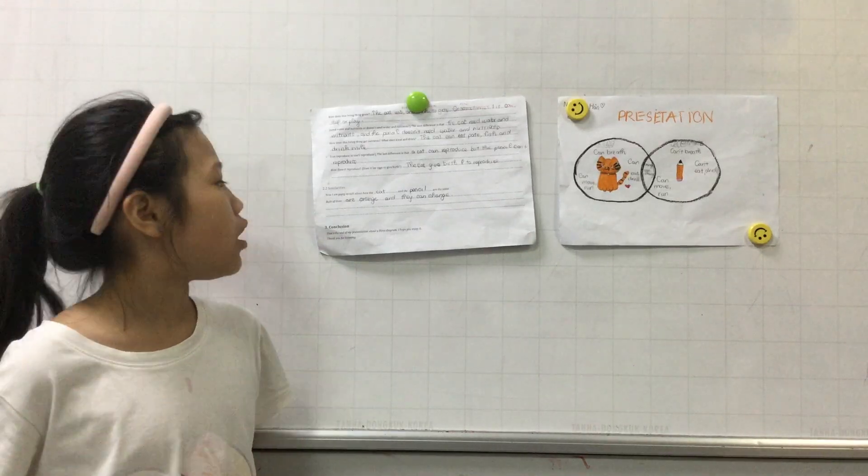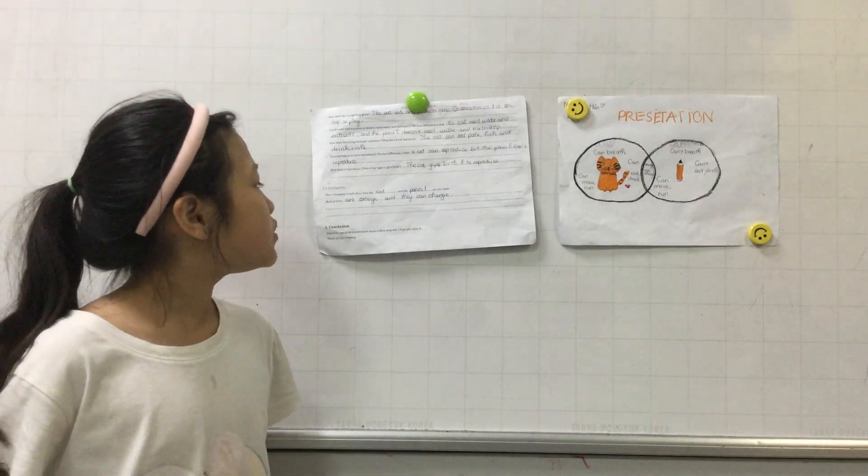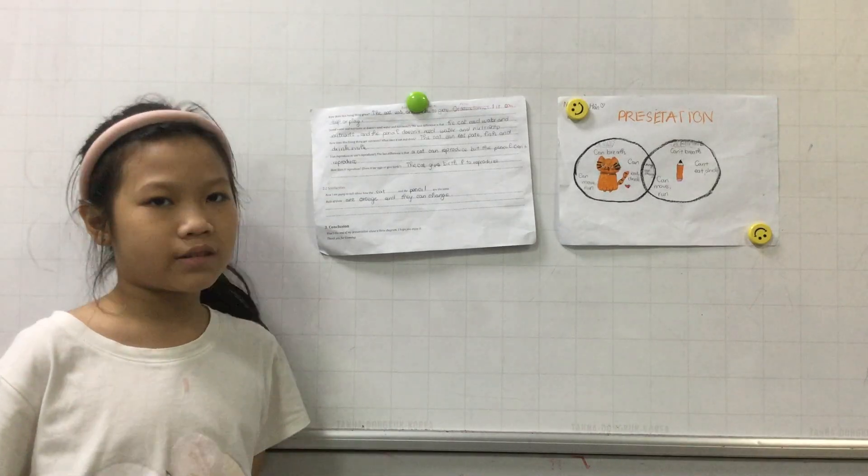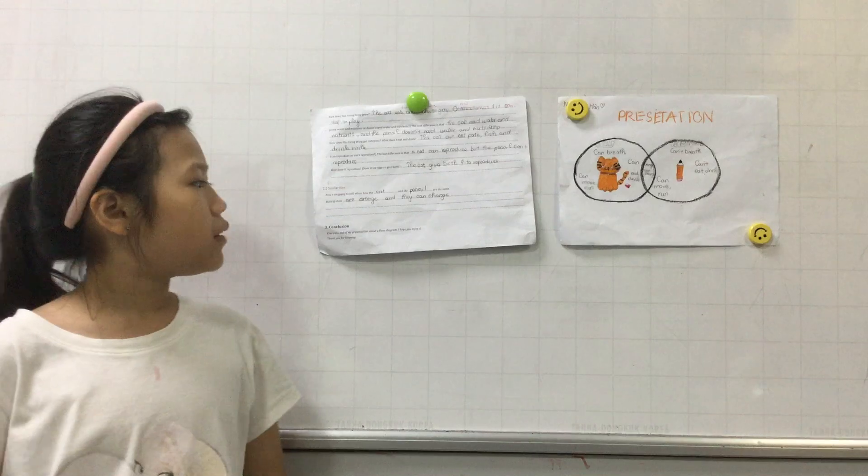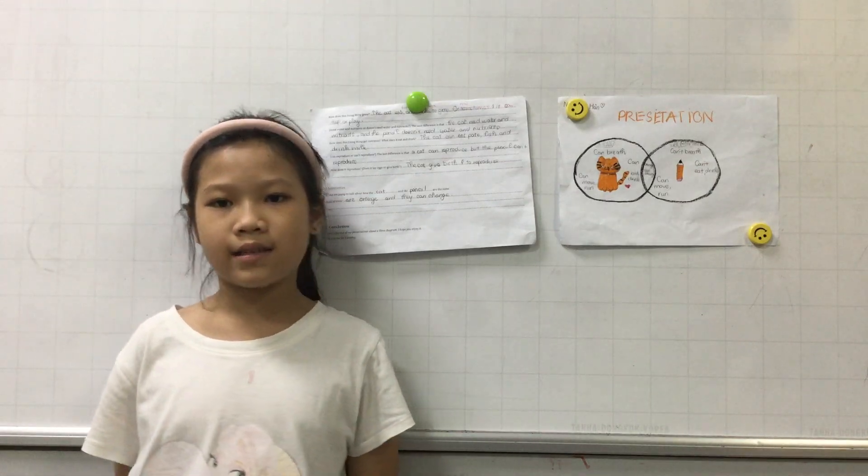Now I am going to talk about how the cat and the pencil are the same. Both of them are orange and they both can change.